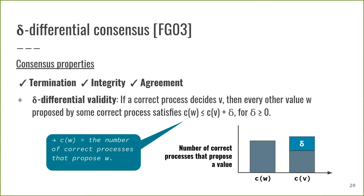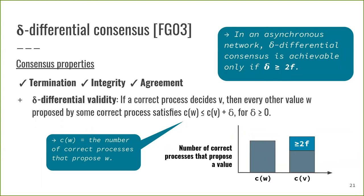Fitzi and Garay introduced the definition of delta differential consensus with the property of delta differential validity. This property satisfies that if a correct process decides the value V, then every other value W that was proposed by some correct process cannot exceed the plurality of the decision value V by more than delta. In particular, for delta equals 0, the decided value must be one of the proposed values that is most common among the correct processes and hence makes the initial plurality of the decision value explicit. Another important result of their work is that in an asynchronous network delta must be at least 2f, where f represents the number of faulty processes to achieve delta differential consensus. Along with the definition of block order fairness, these results inspired our work towards our notion of a fair order.